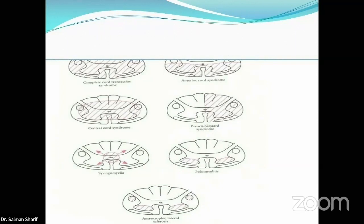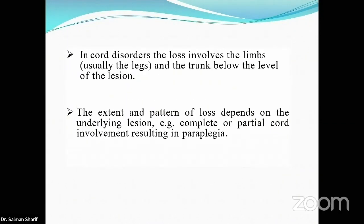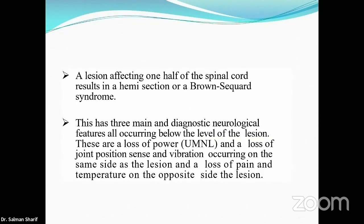Spinal cord syndromes include central cord syndrome, which presents with upper limb weakness greater than lower limb weakness. Brown-Séquard syndrome presents with ipsilateral loss of power and joint position sense, and contralateral loss of pain and temperature sensation. Vibration and position sense are preserved on the contralateral side in Brown-Séquard.